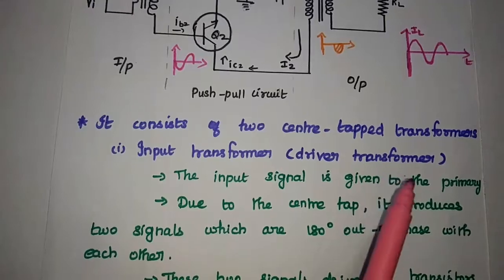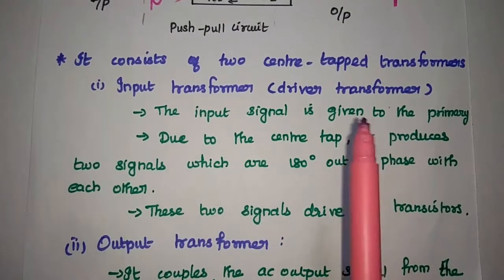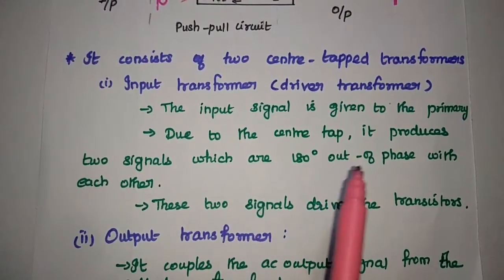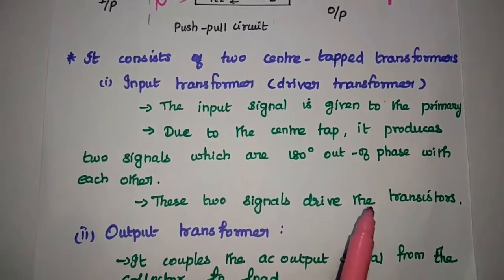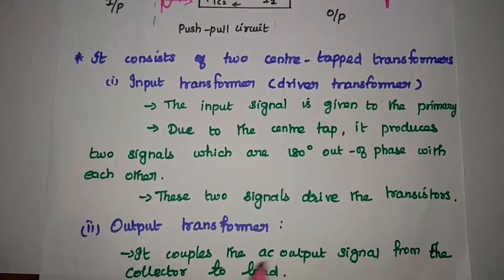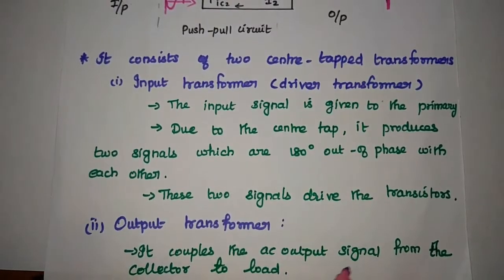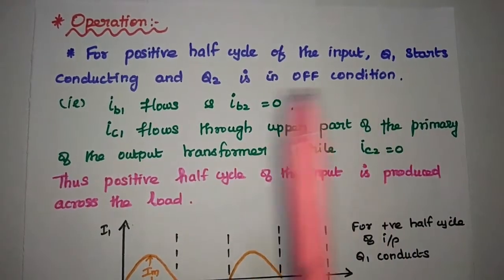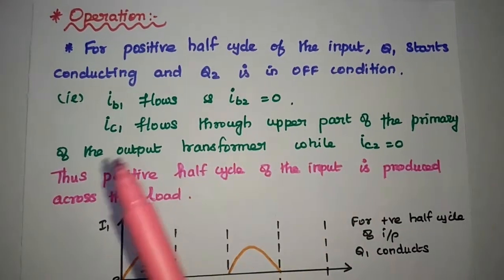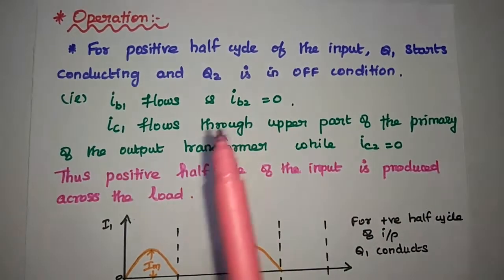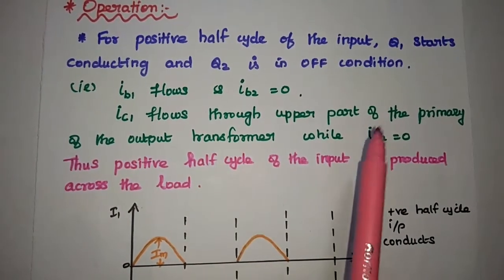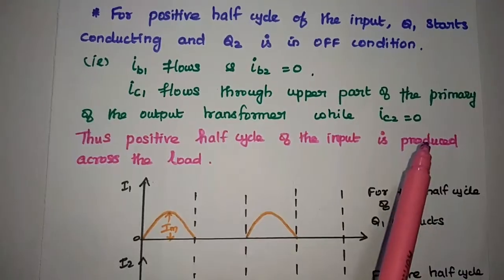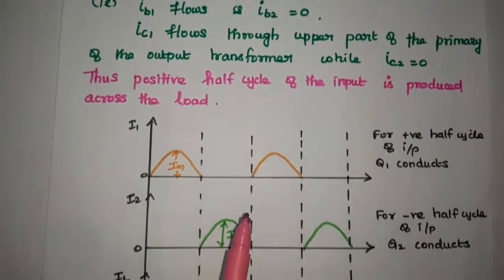It consists of two center-tapped transformers. The first one is the input transformer, that is the driver transformer. The input signal is given to the primary. Due to the center-tap, it produces two signals which are 180 degrees out-of-phase with each other, and these two signals drive the transistors. The second one is the output transformer, which couples the AC output signal from the collector to the load. For the positive half-cycle of the input, Q1 starts conducting and Q2 is in the off-condition, meaning IB1 flows and IB2 is equal to 0. The collector current IC1 flows through the upper part of the primary of the output transformer, while IC2 is equal to 0. Thus, the positive half-cycle is produced across the load.